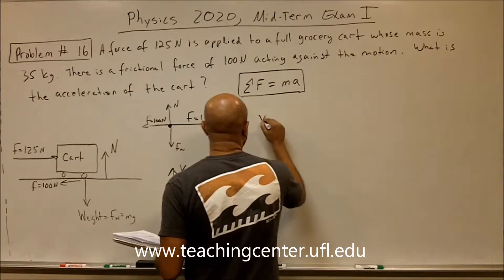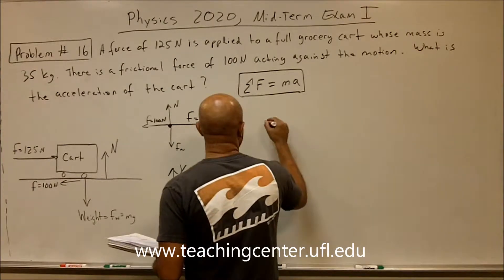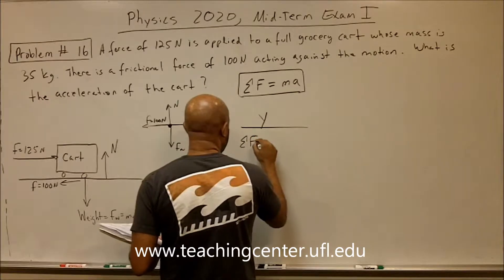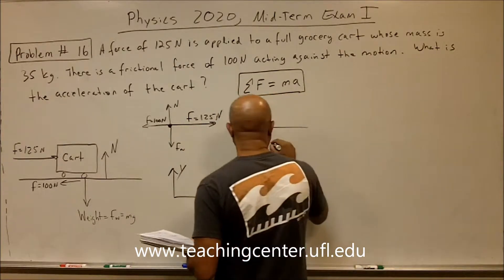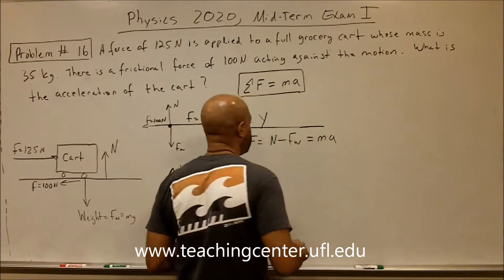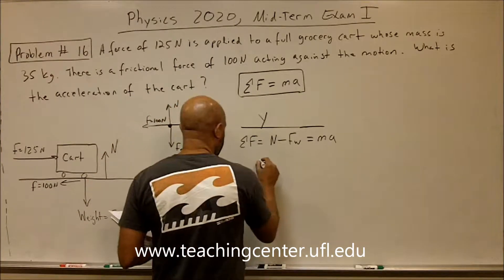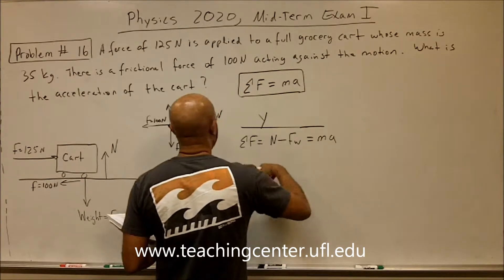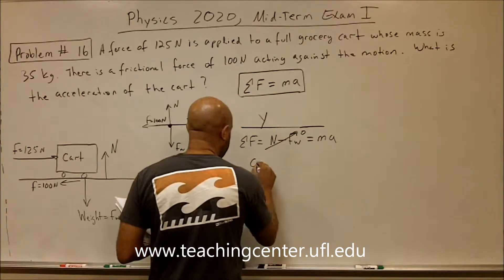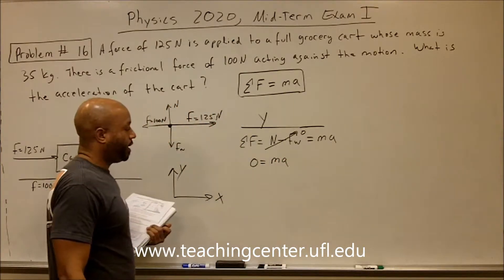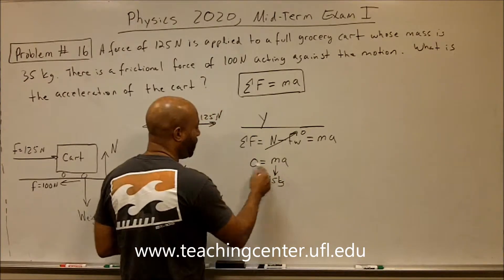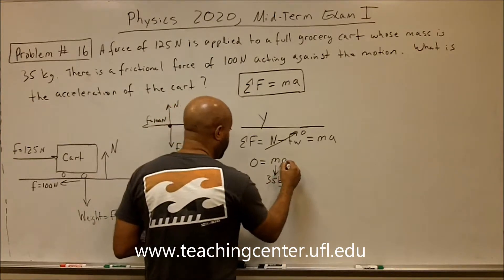Let's look at the forces acting in the y direction. The sum of the forces in the y direction is: positive normal force minus the weight force, and that equals mass times acceleration in y. We know the normal force is equal and opposite to the weight force, so they cancel out to zero. Therefore zero equals ma, and since the mass cannot be zero — it's 35 kilograms — the acceleration in the y direction must equal zero.